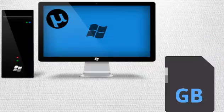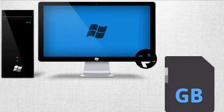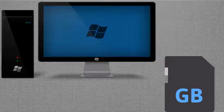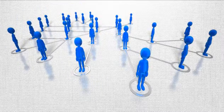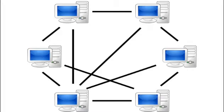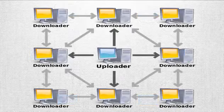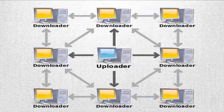BitTorrent uses a peer-to-peer protocol in which it creates a group of computers who are downloading and uploading the same file. It creates different nodes — different clients — which connect with each other and share data, share the bandwidth with each other, thus increasing the downloading speed.